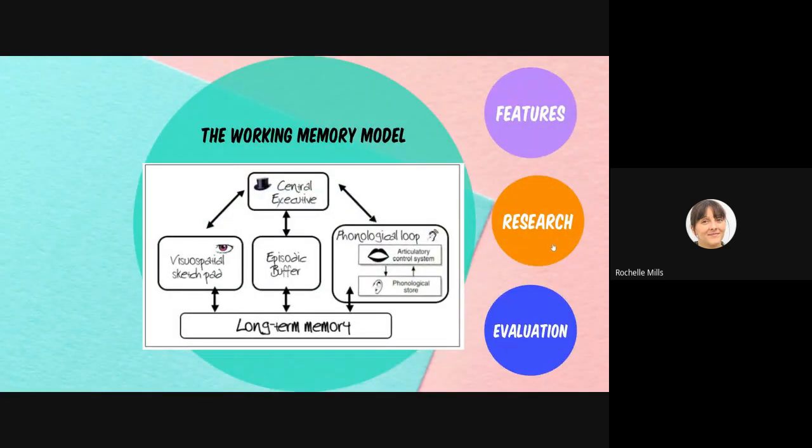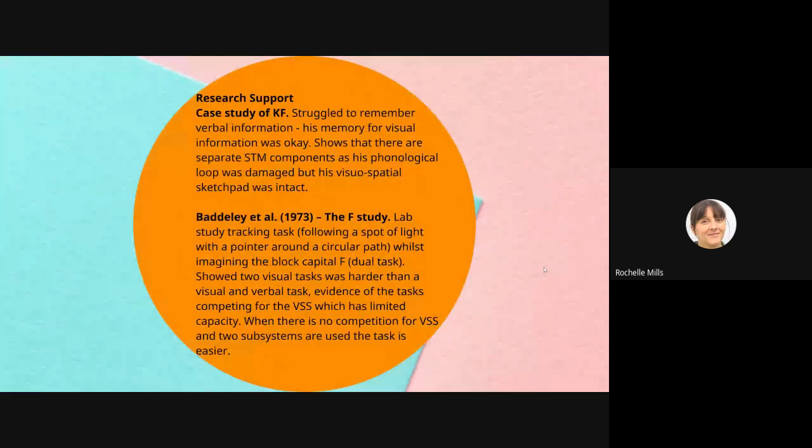We've got research to support the working memory model. We've got the case study of KF. KF struggled to remember verbal information, but his memory for visual information was okay. This shows that there are separate short-term memory components, because his phonological loop was damaged but his visuospatial sketchpad was intact. You can use the case study of KF to support the working memory model, but you can also use it to oppose the multi-store model of memory.